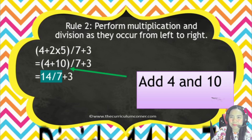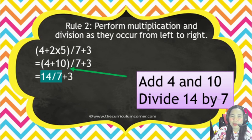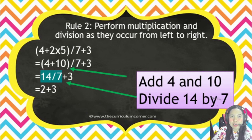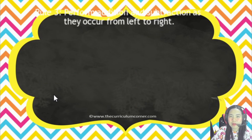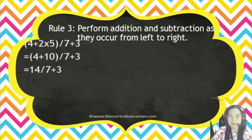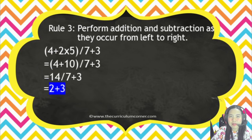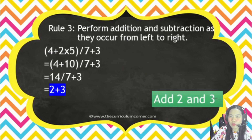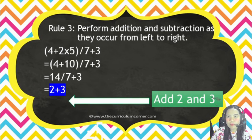Continuing: 4 plus 10 equals 14, then divide 14 by 7, the answer is 2. The 3 carries over from the original expression. Then by rule number 3, perform addition and subtraction from left to right: 2 plus 3. Our final answer is 5.